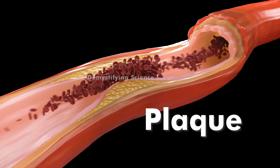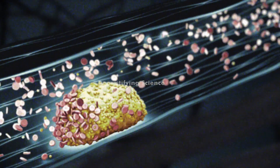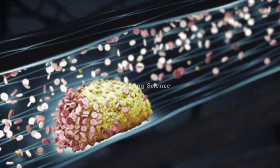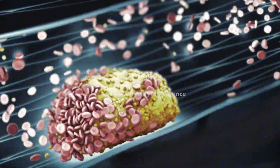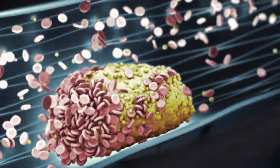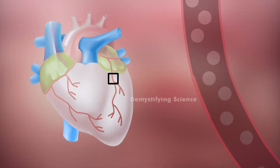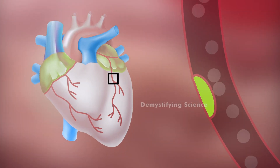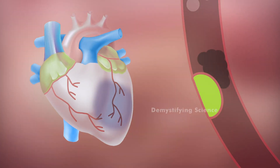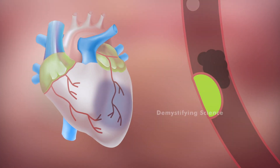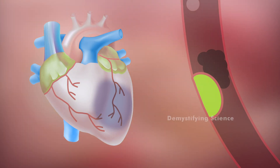This build-up is called plaque. Your arteries become narrow as a result of the plaque preventing blood flow. And if the heart doesn't get enough blood, it cannot get the oxygen and nutrients it needs to work properly. This can cause chest pain, angina, or a heart attack.